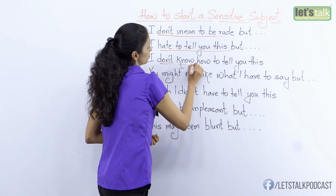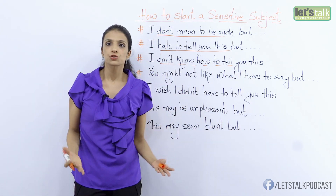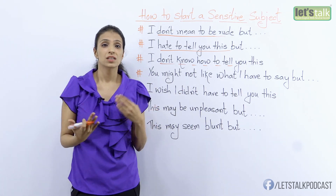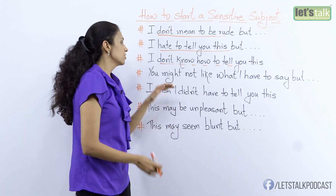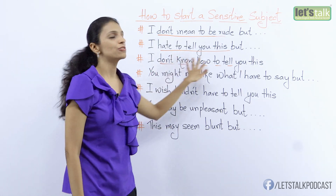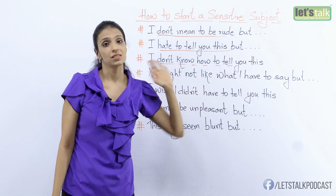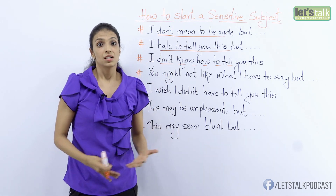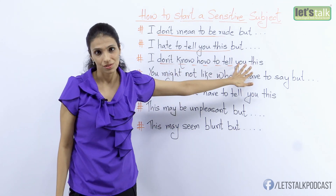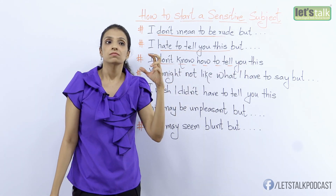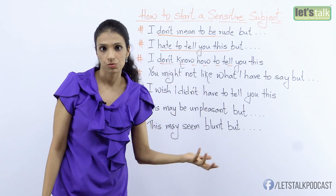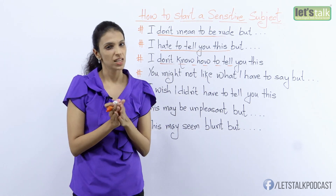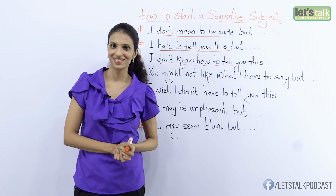The next one: 'I don't know how to tell you this.' This just shows that you are literally struggling with words — still thinking how to tell them, or what are the correct words that would not offend them. So I tell my friend: 'I don't know how to tell you this, but Maria, your dress doesn't suit you.' It shows you're confused how to put the point across. The minute you say it, the other person is going to guess that something not so nice is coming their way.